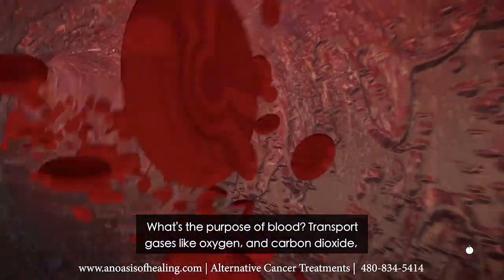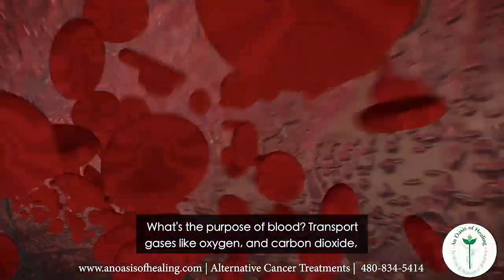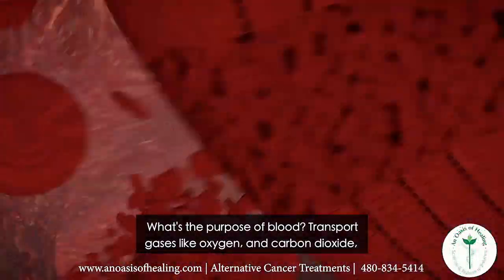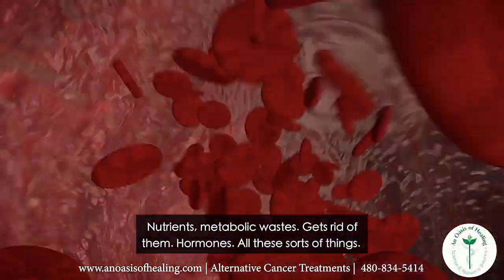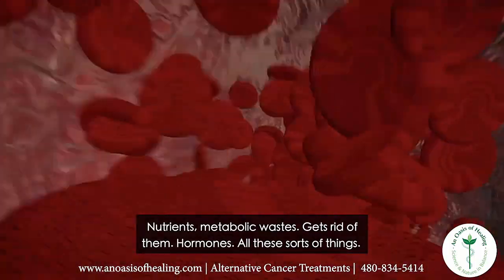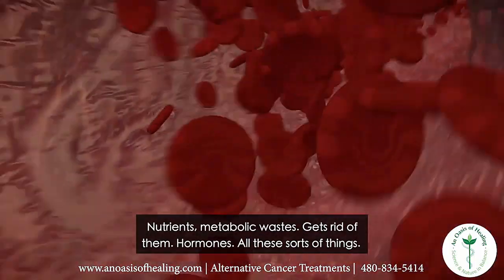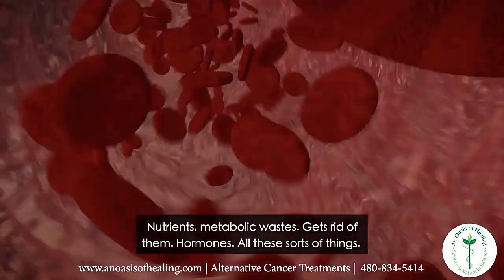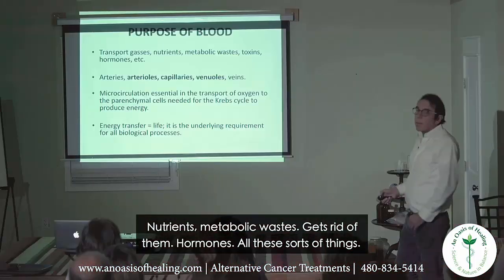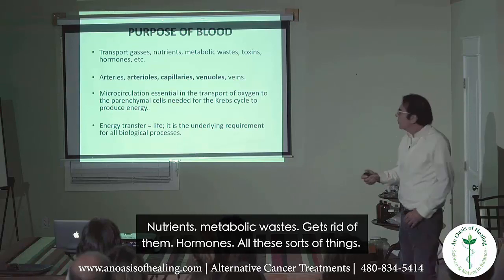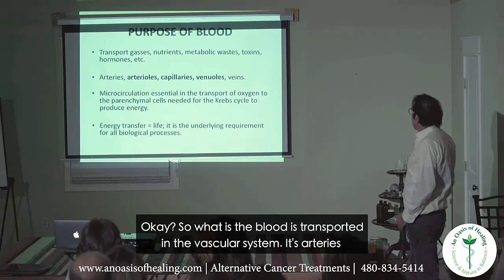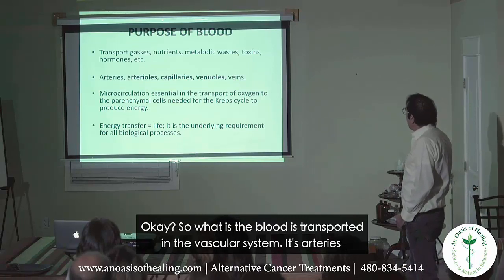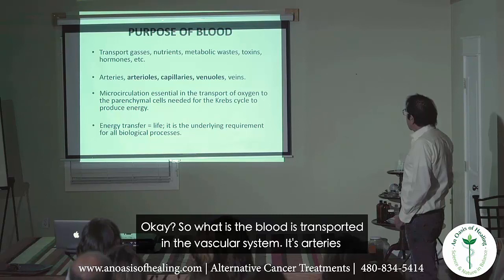What's the purpose of blood? To transport gases like oxygen and carbon dioxide, nutrients, metabolic wastes — it gets rid of them — hormones, all these sorts of things. So blood is transported in the vascular system.